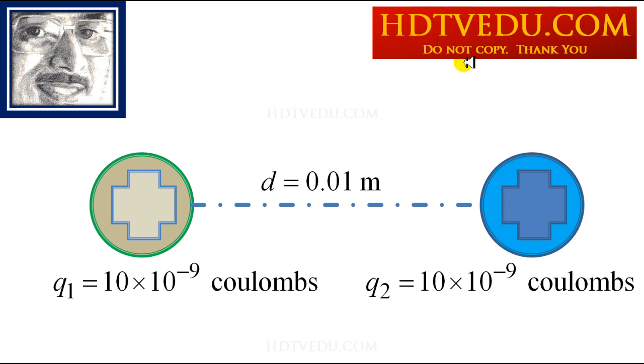All right, so here we have two positive charges separated by a distance of 0.01 meters. Q1, 10 times 10 to the power of negative 9. Q2, 10 times 10 to the power of negative 9.